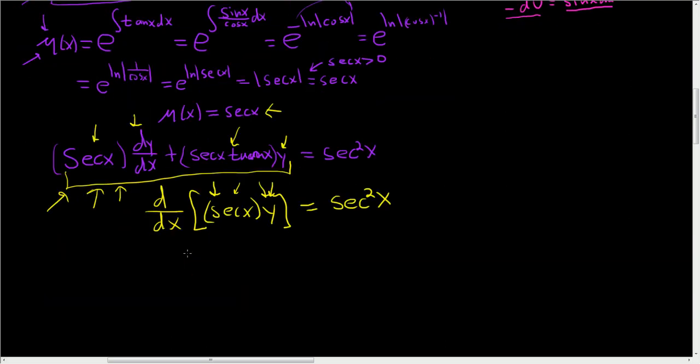At this point, we can simply integrate both sides. When you integrate the left-hand side, the derivative goes away, so you end up with secant x times y. And when you integrate secant squared, just think, what is a function whose derivative is secant squared? Well, tangent. And then let's go ahead and add our constant c.